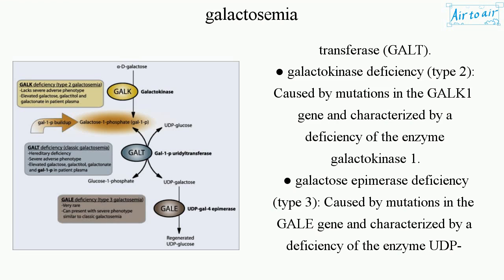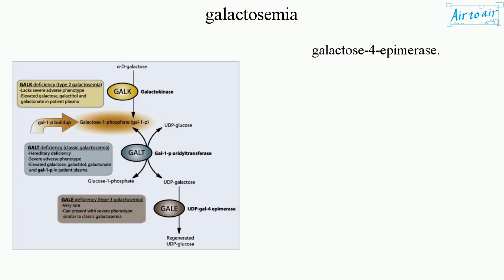Galactose Epimerase Deficiency (Type 3): Caused by mutations in the GALE gene and characterized by a deficiency of the enzyme UDP-galactose-4-epimerase.